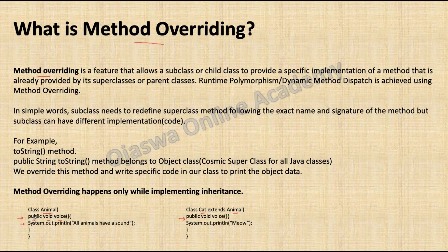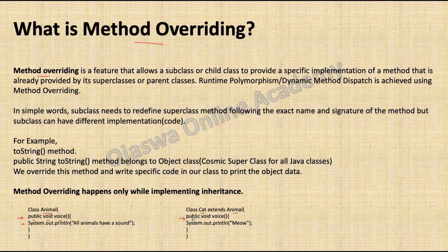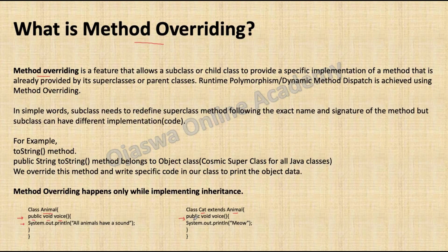What does this mean? For example, voice in superclass animal has a public access modifier. Public access modifier is the widest scope. When you override this method in subclass cat, you cannot change this to default, protected, or private access modifiers, because you cannot decrease the scope of the access modifier. You can increase it but not decrease it. If the voice method in superclass animal has default scope — that is, no public access modifier — then you can make it public or protected in the subclass.